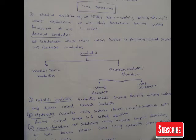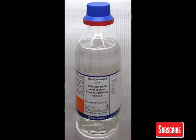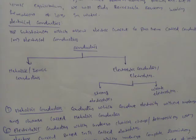Today we are going to discuss the classification of conductors. Conductors have been classified into two major types: metallic conductors and electrolytic conductors. Electrolytic conductors are also called electrolytes. Similarly, electrolytes have been classified into two major types: strong electrolytes and weak electrolytes.